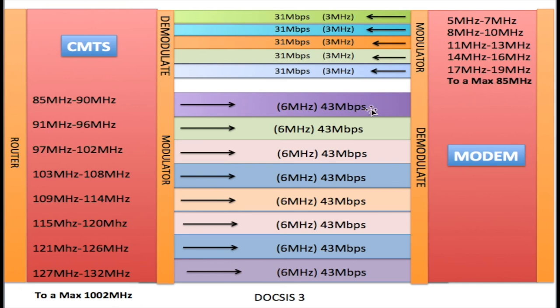For instance, if you have a 32-channel modem and moved into a brand new subdivision where no one else is on the cable but you, you could actually get the full one gigabit of data — that is, if you're paying for the one gigabit tier.